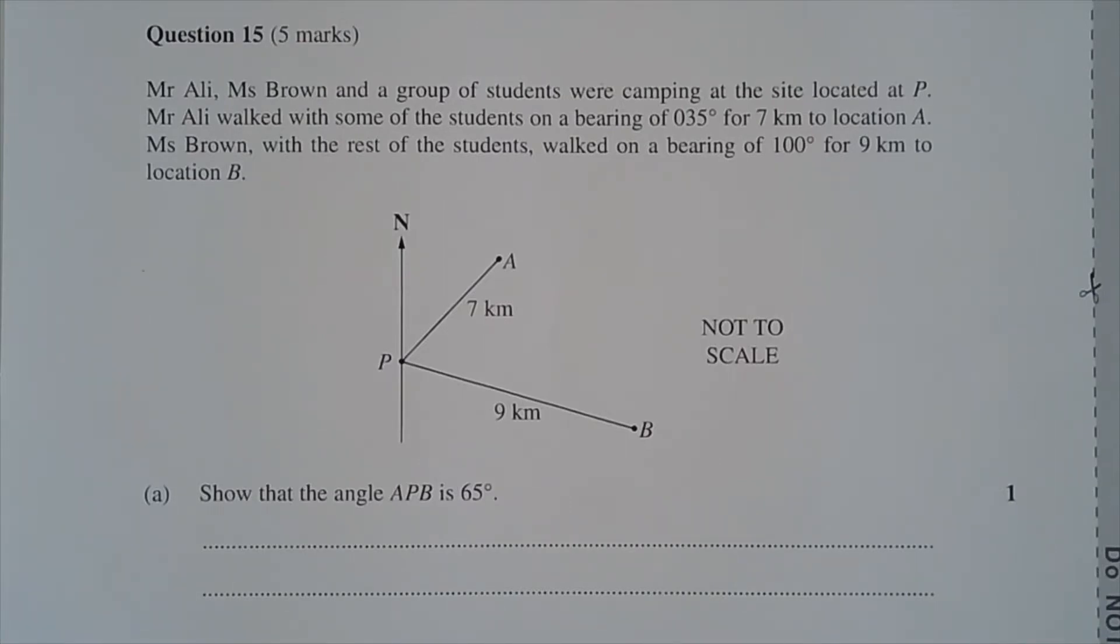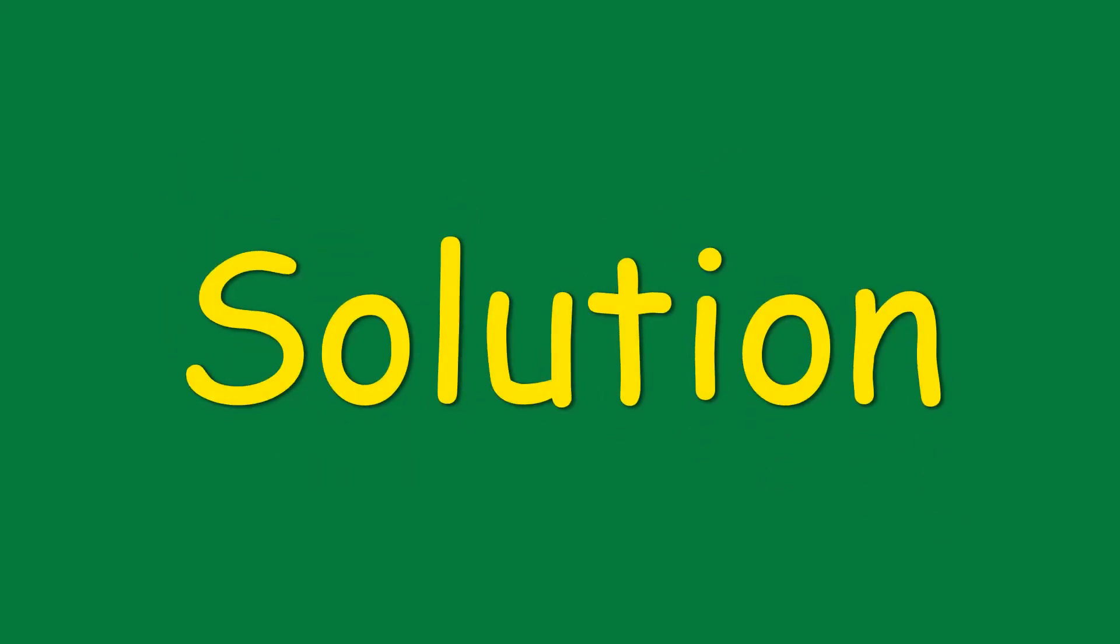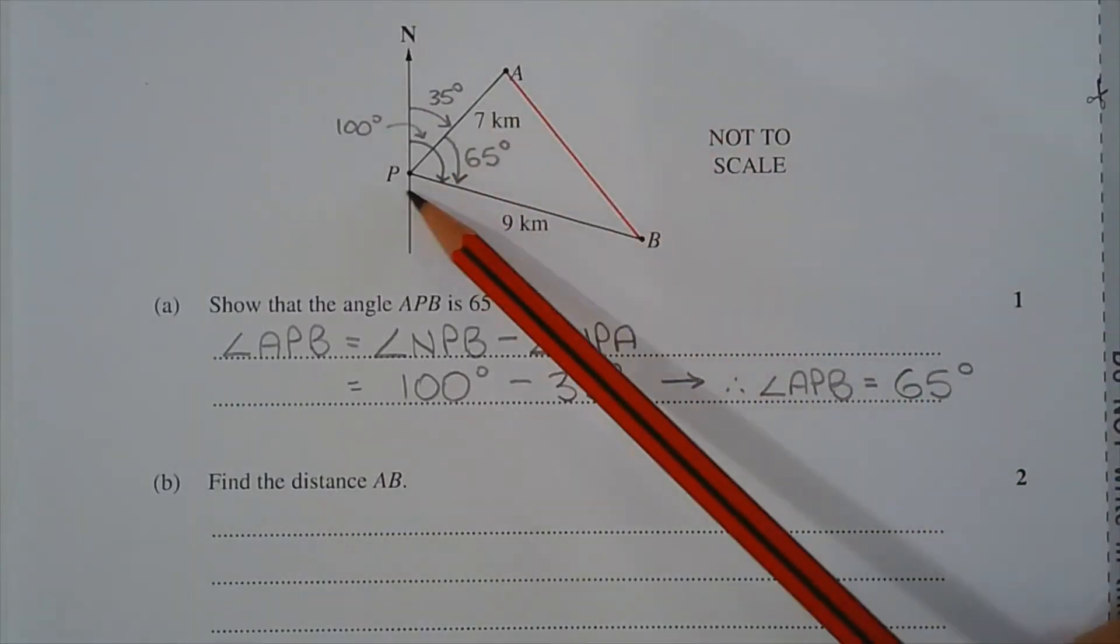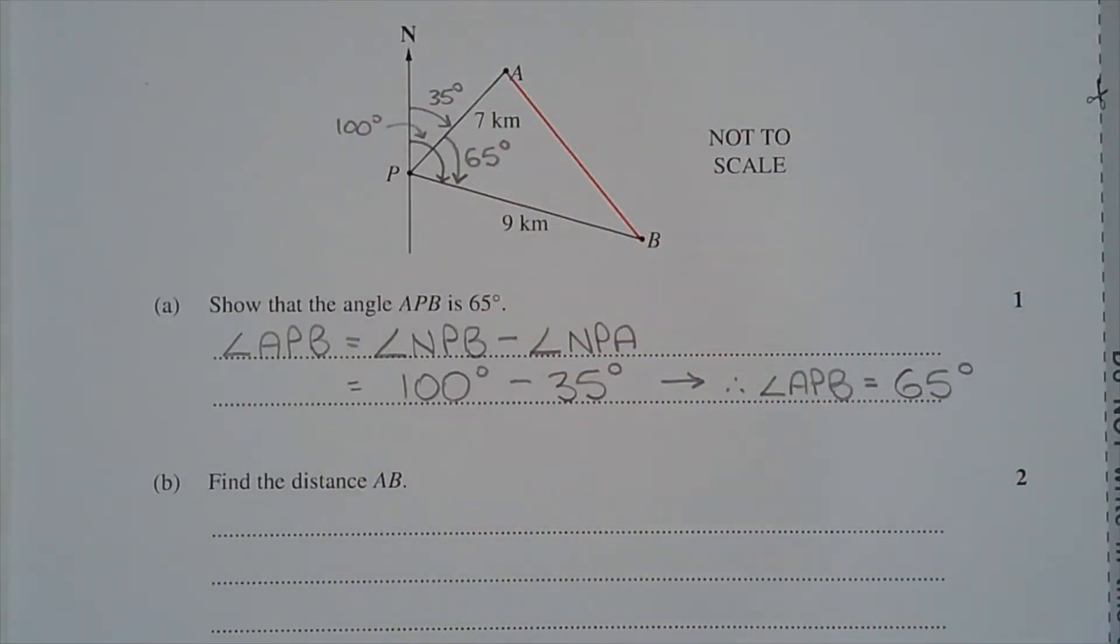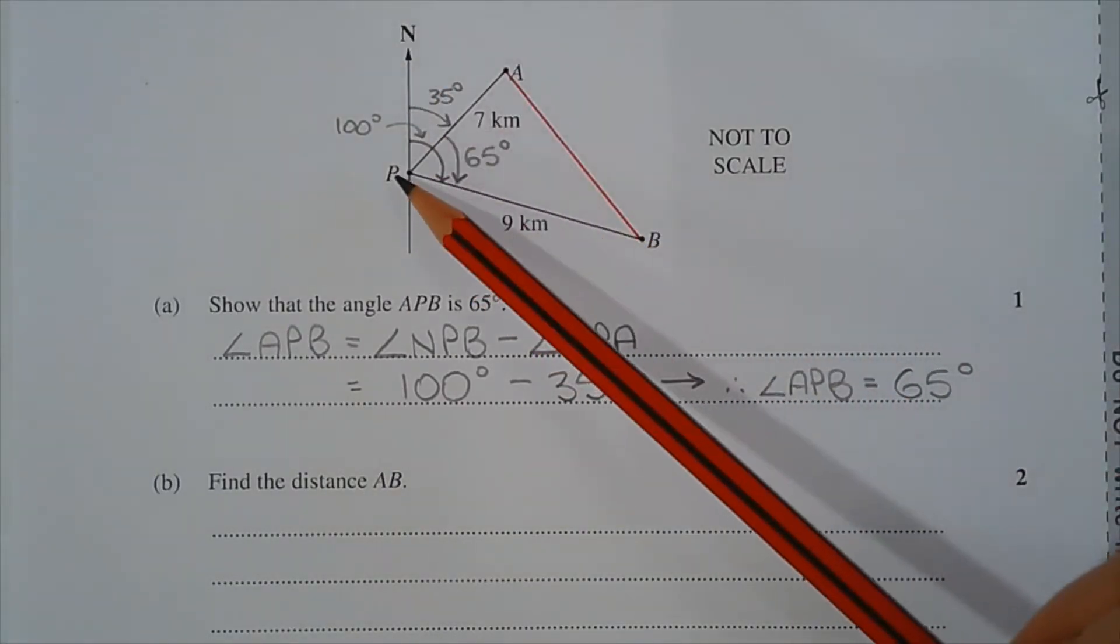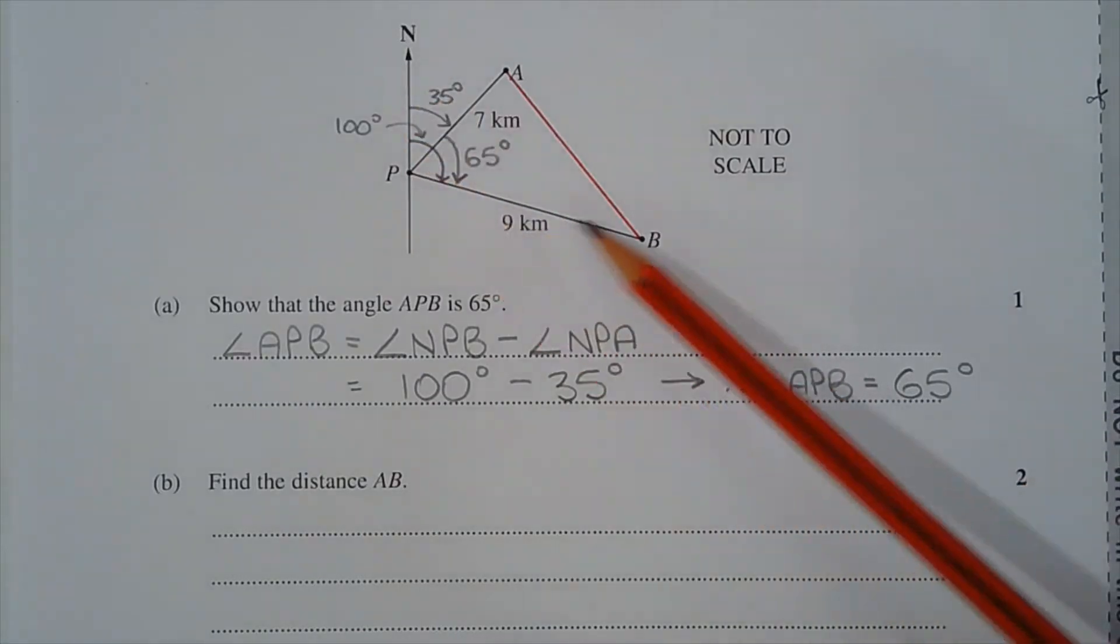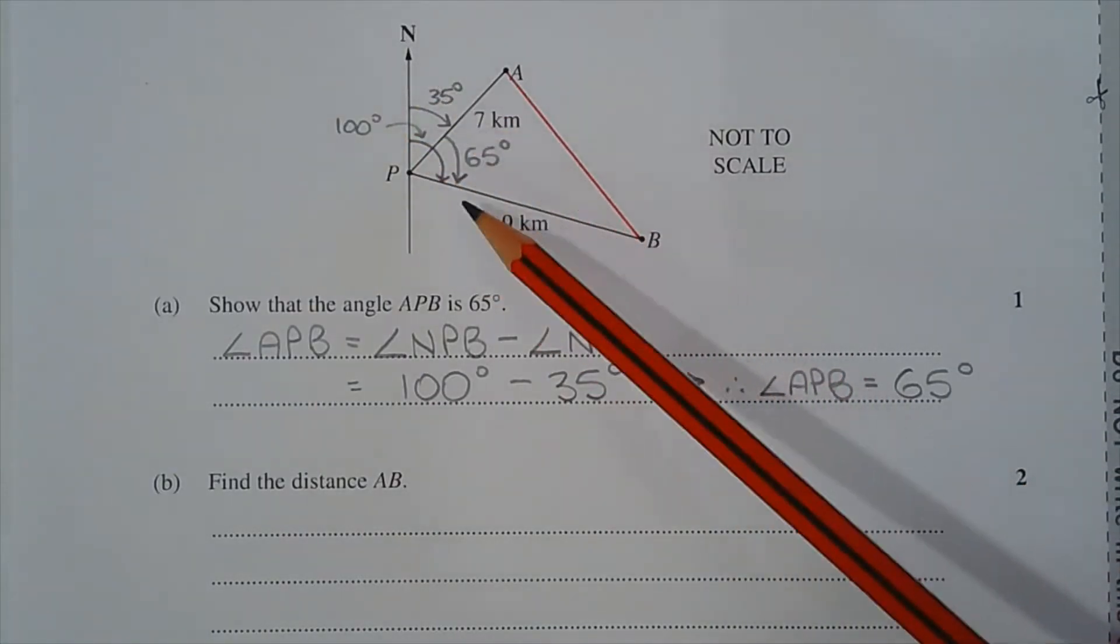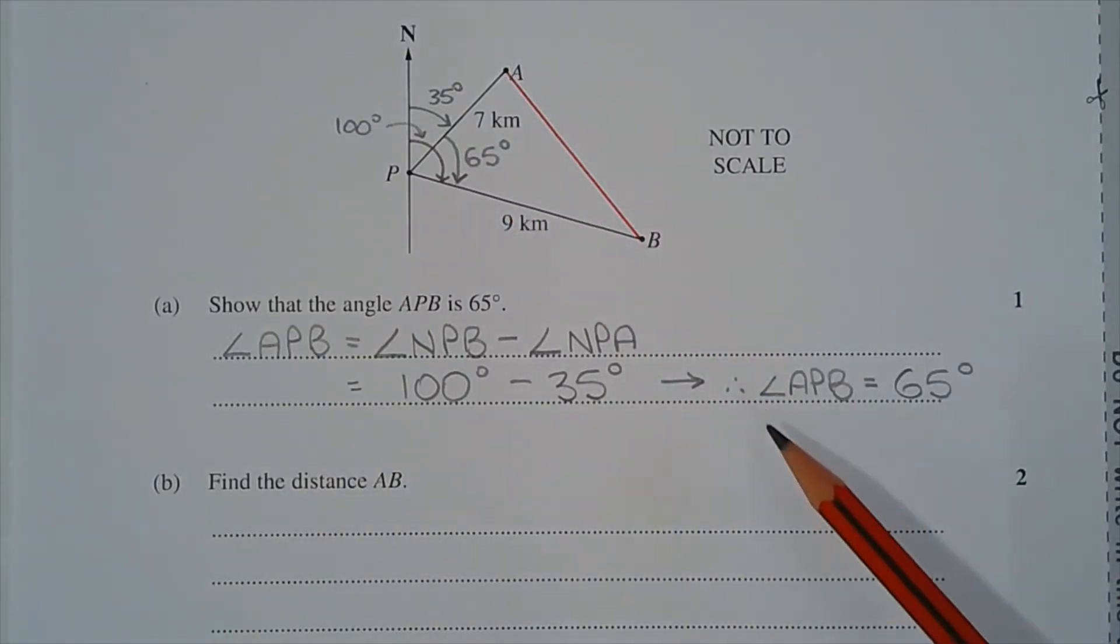Part A. Show that the angle APB is 65 degrees. The size of angle APB is the difference between the two bearings in the question. Mr. Ali's group is walking on a bearing of 35 degrees. Ms. Brown's group is walking on a bearing of 100 degrees. And the difference between the two, so 100 minus 35, is equal to 65. So therefore, angle APB is equal to 65 degrees.